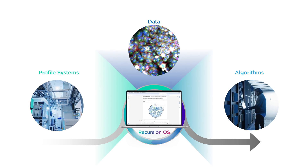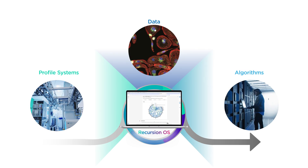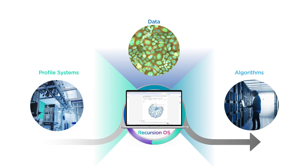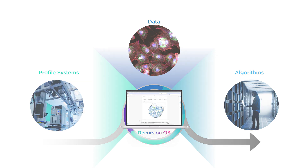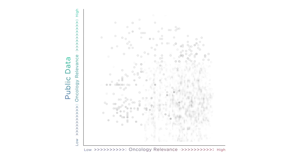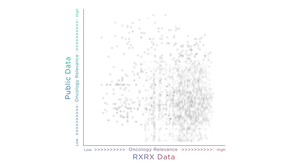One of the most valuable features of the Recursion OS is that it drives insights that are novel. Take this plot of disease targets, for example. Using large language models, we score every human gene on our platform by its relevance in oncology, using both public datasets and our own proprietary data.